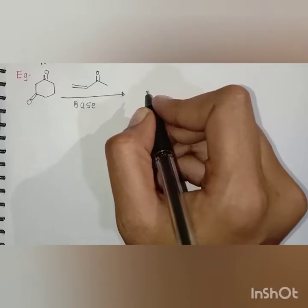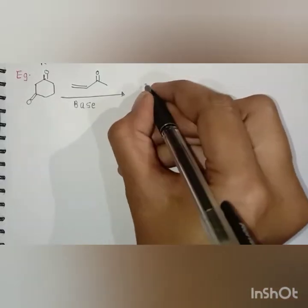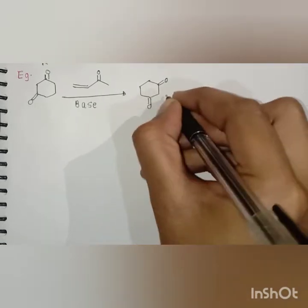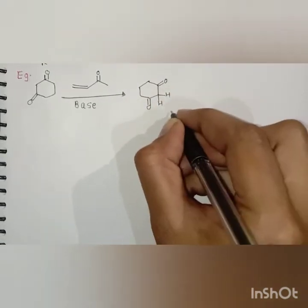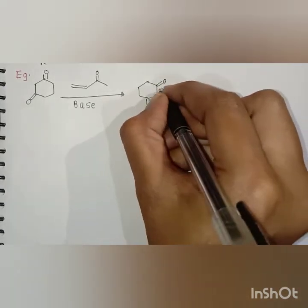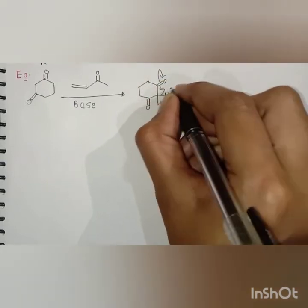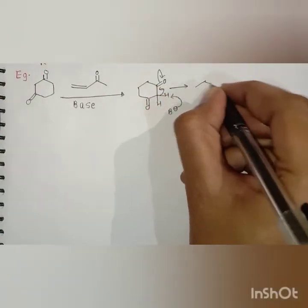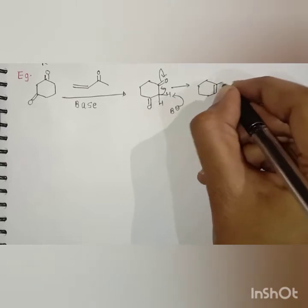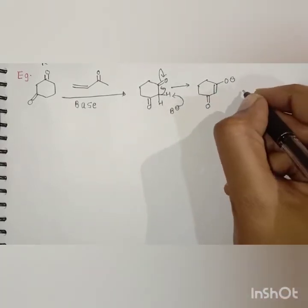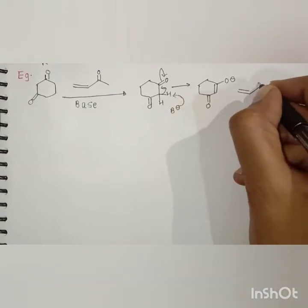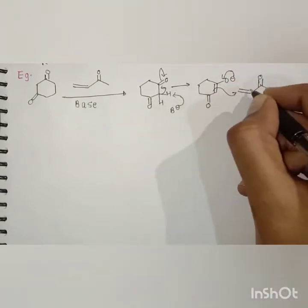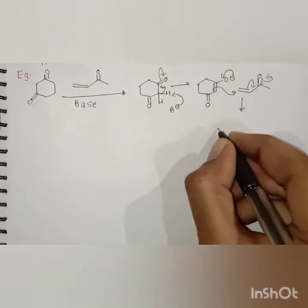Now in this second reaction, firstly in basic conditions, removal of this proton takes place. This proton is very acidic as it can conjugate with two carbonyl groups. We get this enolate, and in the next step, methyl vinyl ketone reacts with this enolate in a conjugate manner.